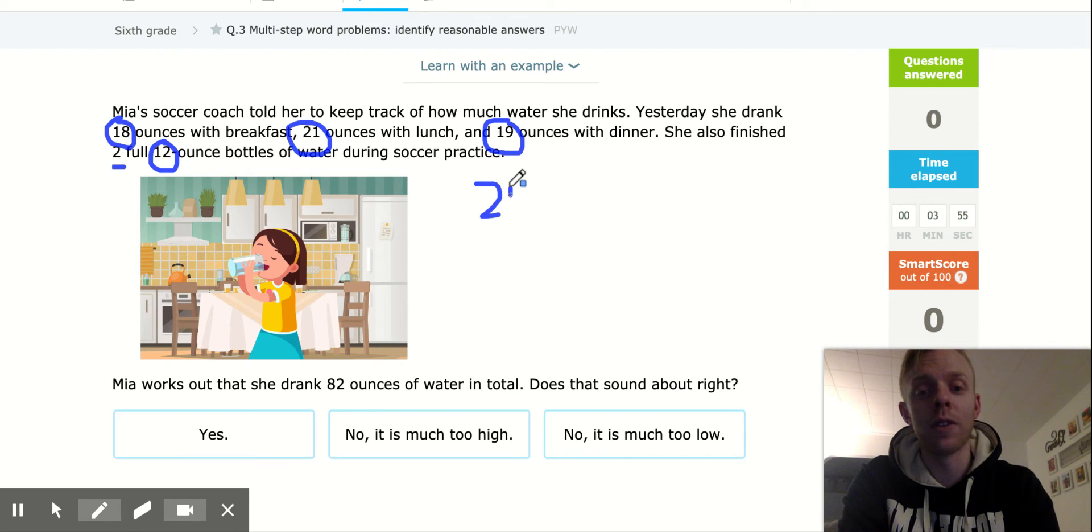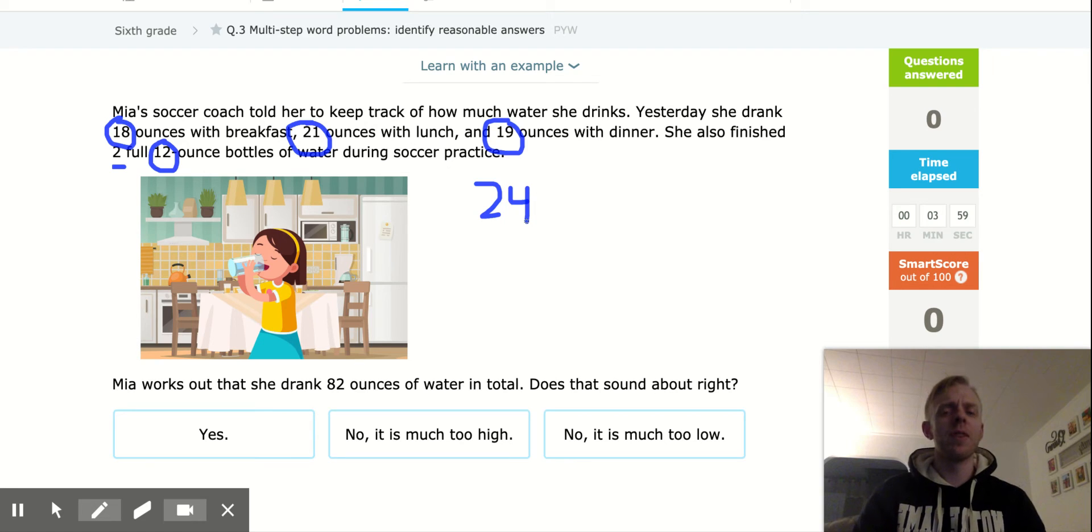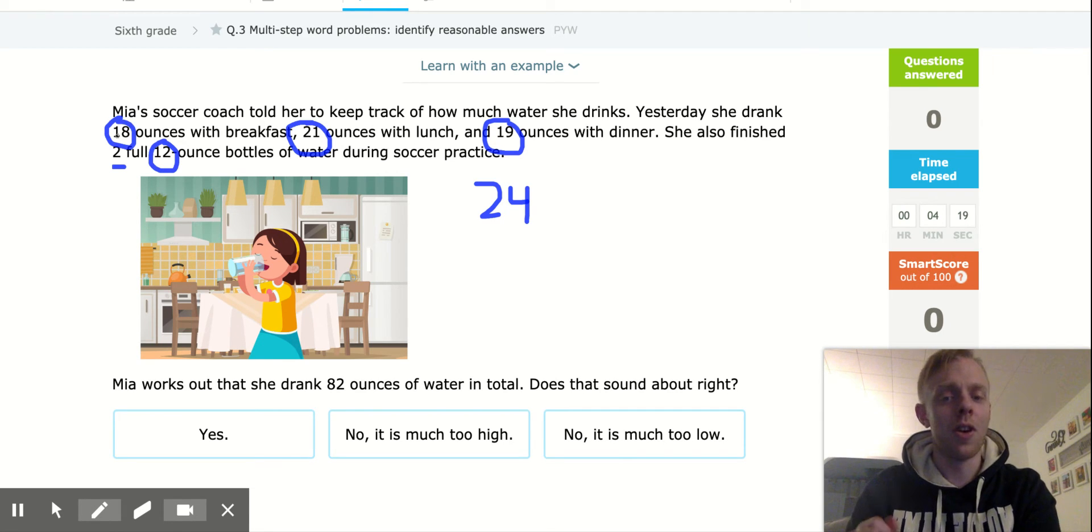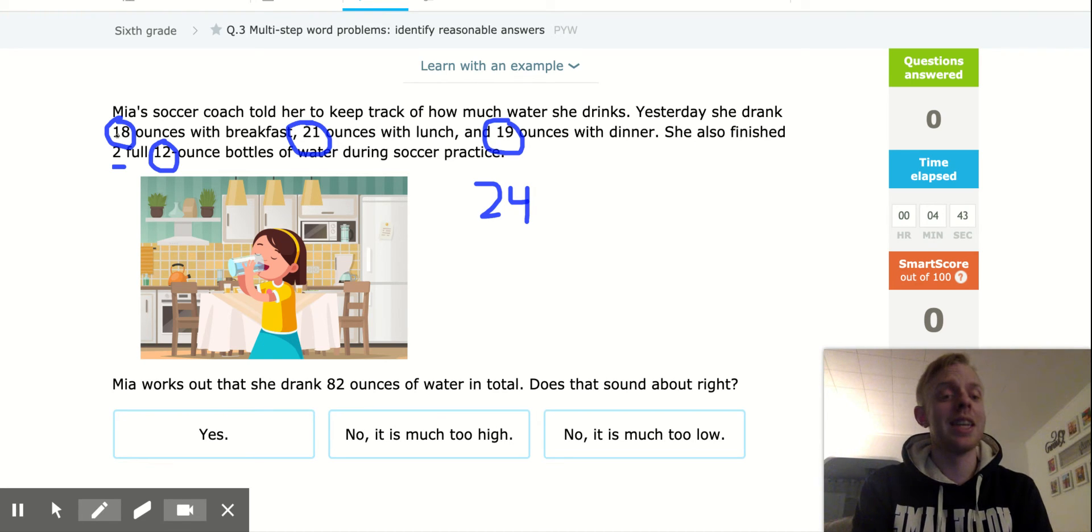So we have the number 24. And then, you know what we're going to do? Instead of having to deal with the number 18 and the number 21 and the number 19, because they're kind of ugly numbers, we could estimate. Let's see how that works out. The number 18, that's pretty close to 20. Let's hold on to that number. 21, also pretty close to 20. 19, also pretty close to 20. And 24, it's a little high. But if we have 20, 20, 20, and 24, we can add those pretty quickly mentally. 20 plus 20 is 40, 40 plus 20 is 60, 60 plus 20 is 84.